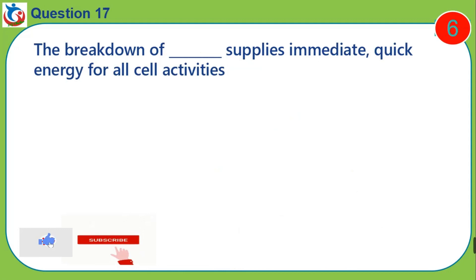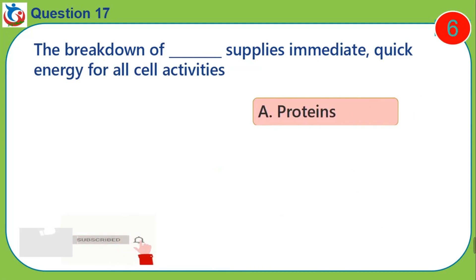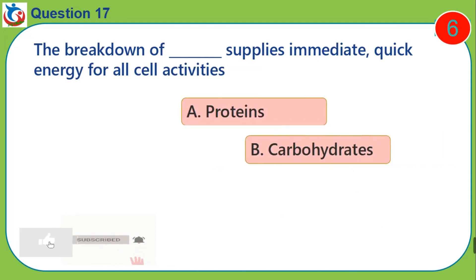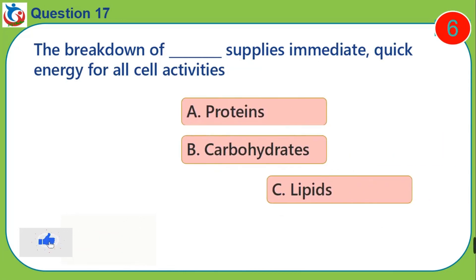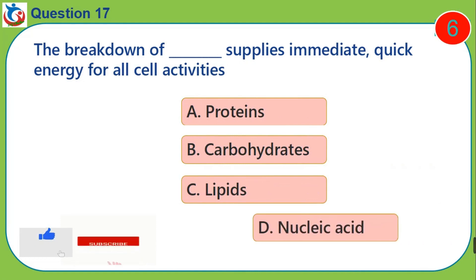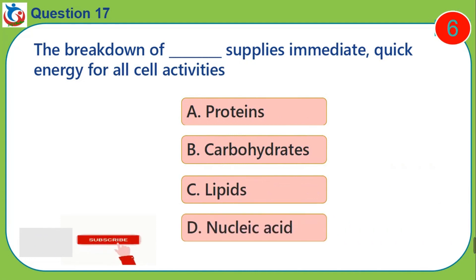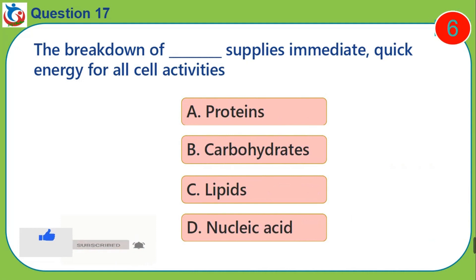Question 17. The breakdown of dash supplies immediate, quick energy for all cell activities. A. Proteins. B. Carbohydrates. C. Lipids. D. Nucleic acid.